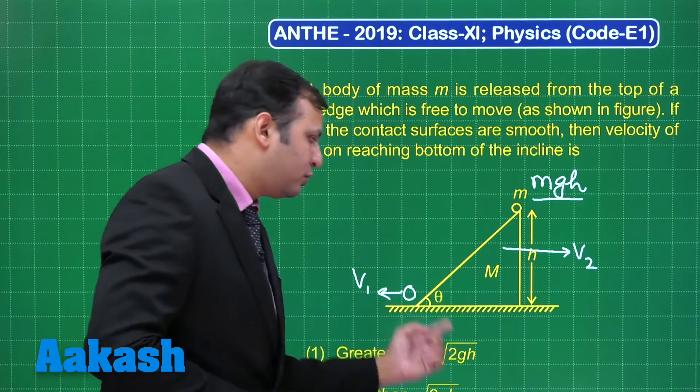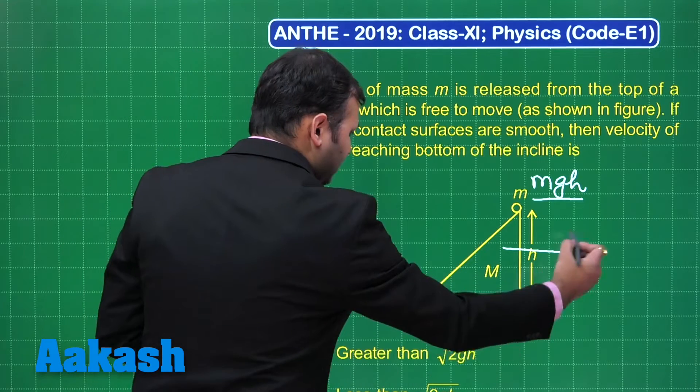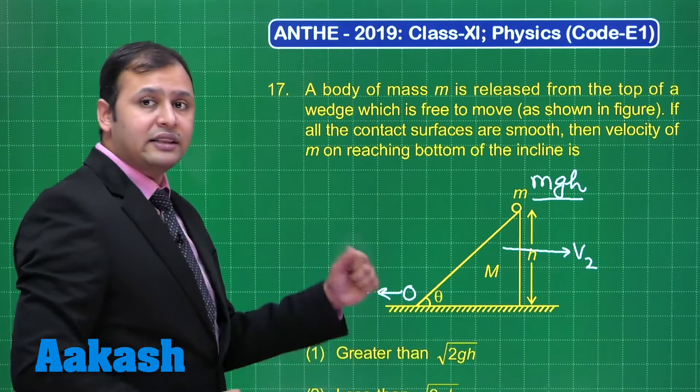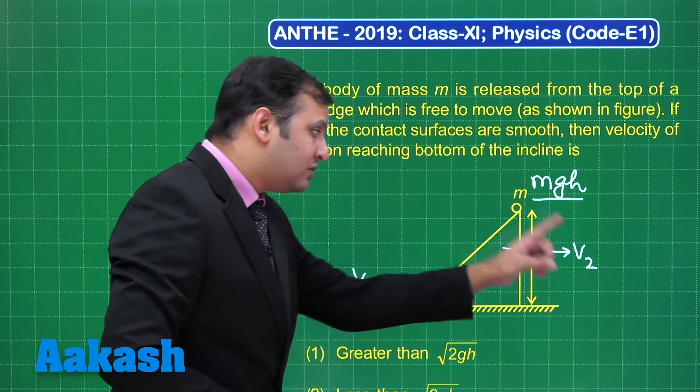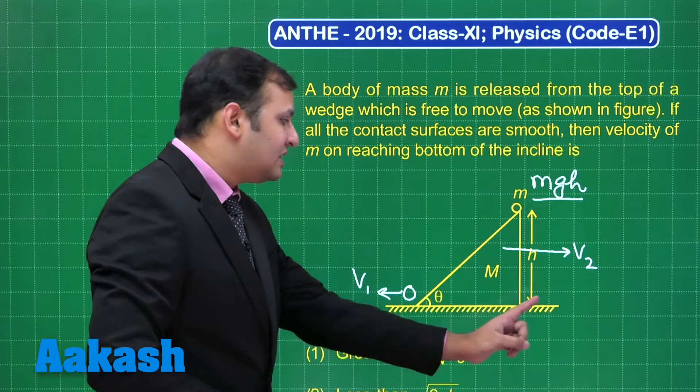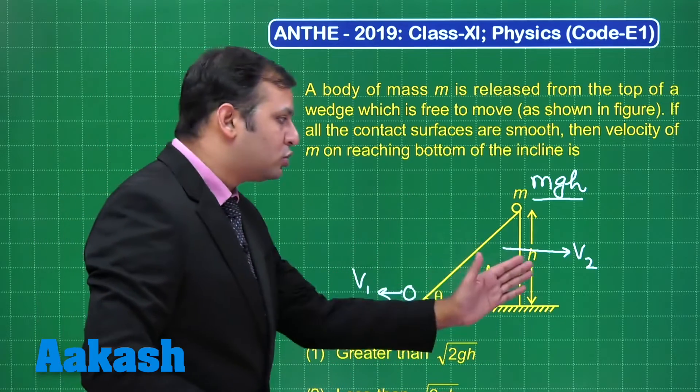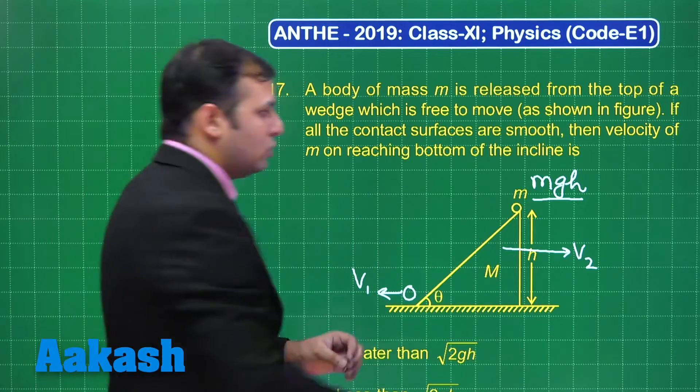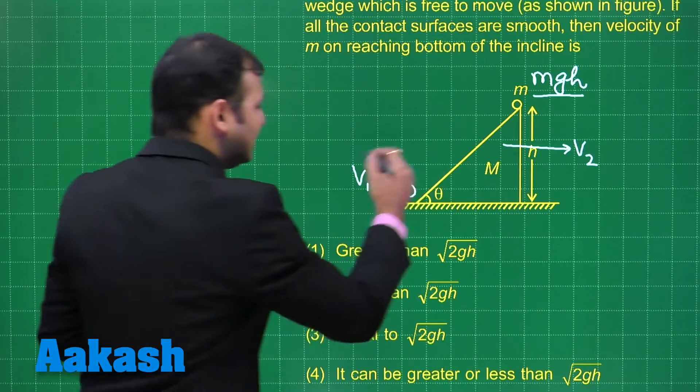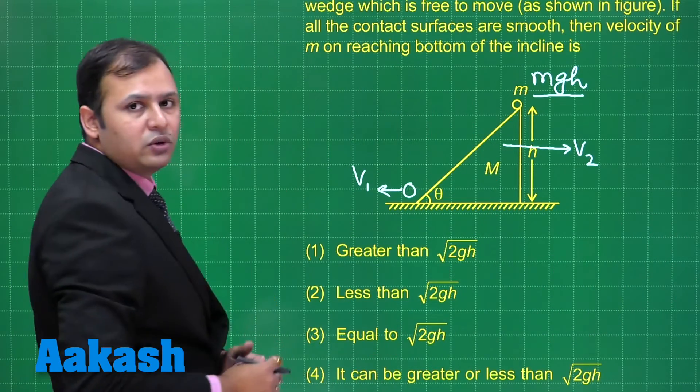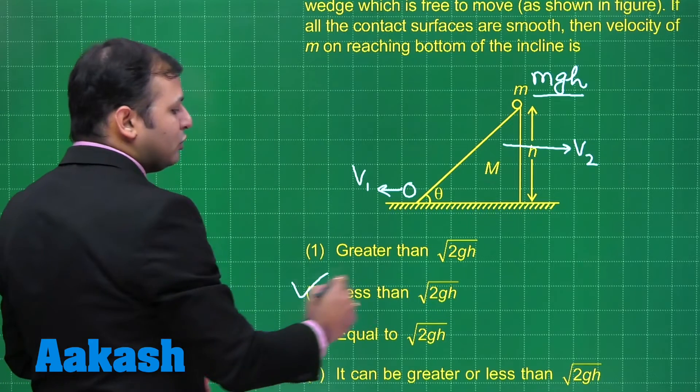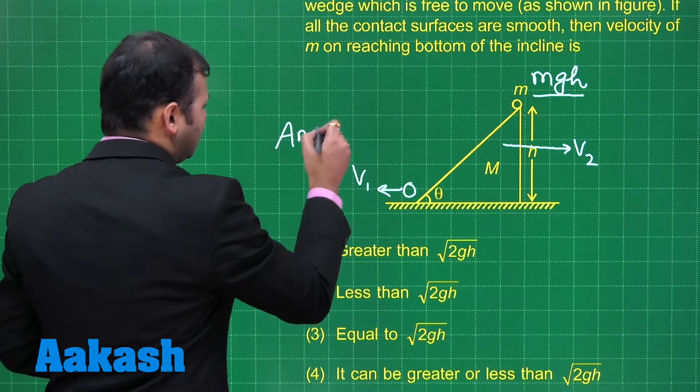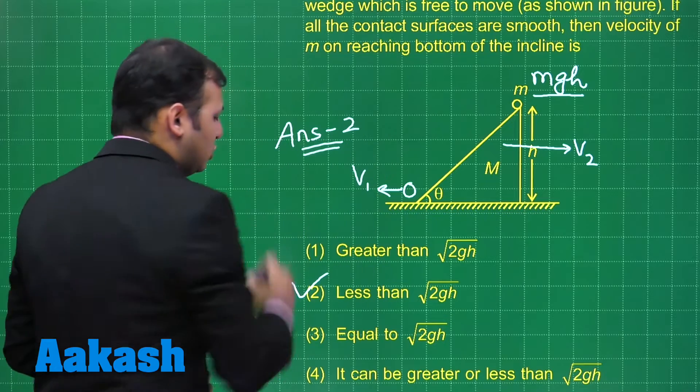If the wedge would have been fixed, this would have been zero and in that case v1 would have been equal to √(2gh). But here since v2 is not zero, the surfaces are smooth, so v2 will also acquire some value. So some energy of this mass would be converted into the kinetic energy of the wedge. So the value of v1 would be less than √(2gh). So the right answer to this question would be option number 2.